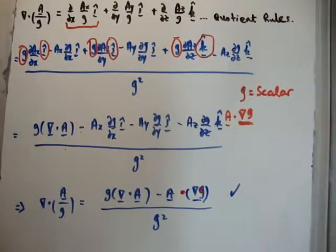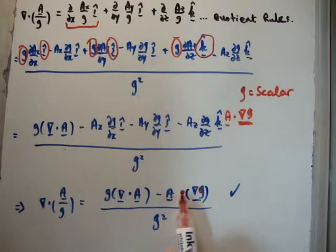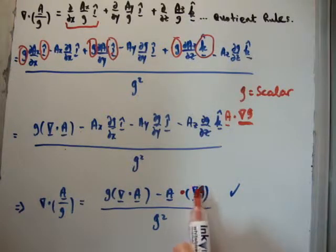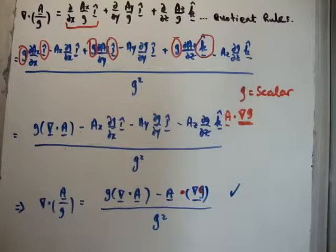So, putting it all together, what we have is that the divergence of the vector field, the vector A divided by g, is g times the divergence of A, minus A dot producted with the gradient of g, all divided by g-squared.